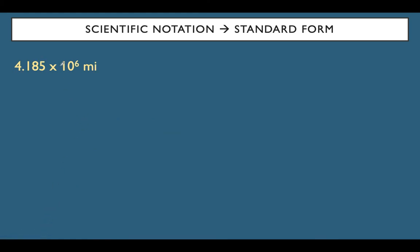I have 4.185 × 10⁶ miles. Positive exponent means this number is going to get larger. If I move it three times I am at the end of the digits, meaning I need three more zeros before the decimal. So I write 4,185,000 miles.